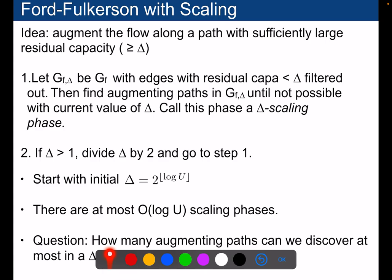The ones that are less than delta will simply be filtered out. Then we find an augmenting path on this graph where you have filtered all the edges with residual capacity smaller than delta. And once it's not possible to find an augmenting path in this graph, then we will consider decreasing delta and we will divide it by two.